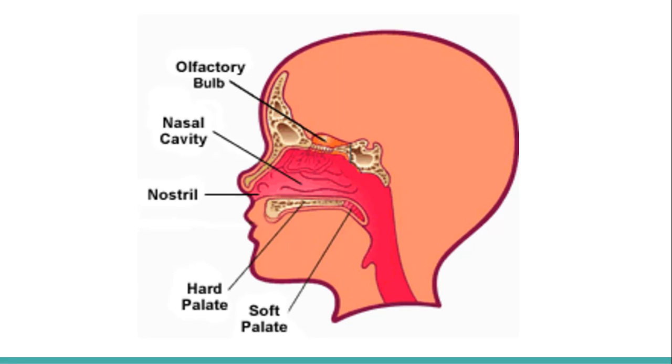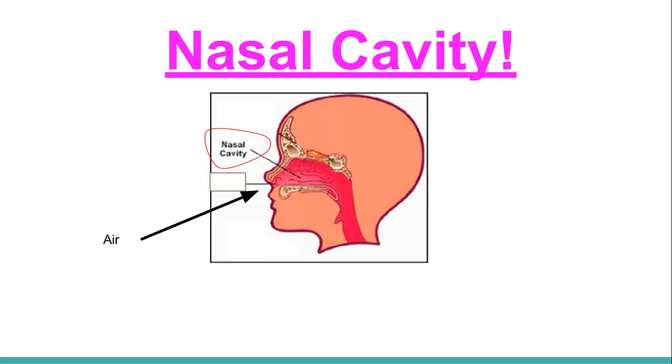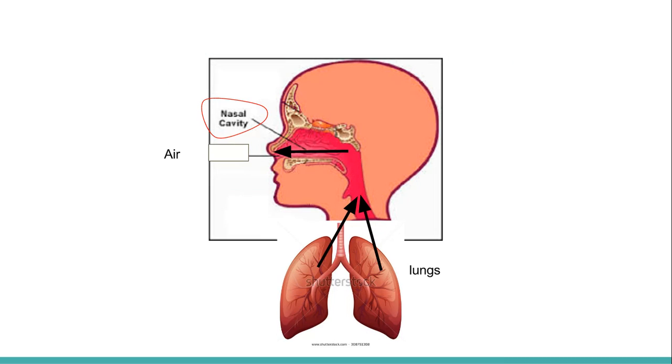When you breathe in air through your nose, it goes through the nasal cavity. The nasal cavity is the space in your head behind your nose. From the nasal cavity, the air goes down your trachea into your lungs. Then the whole process goes reverse when you exhale.